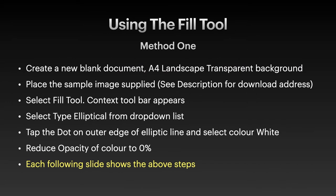Method one is using the fill tool. Start by creating a new blank document — A4 landscape, transparent background. Place the sample image, which is supplied on my website in the download area (see the description). Select the fill tool and the context toolbar appears. From the context toolbar, select type 'Elliptical' from the drop-down list. Tap the dot on the outer edge of the elliptic line — the horizontal one — and select color white. Then reduce the opacity of that to zero.